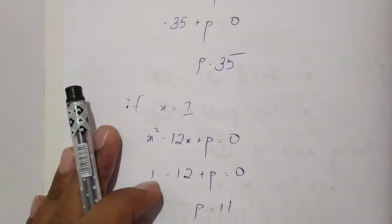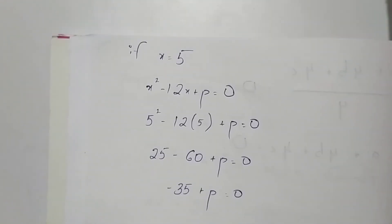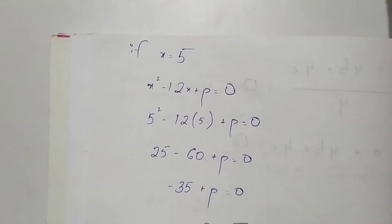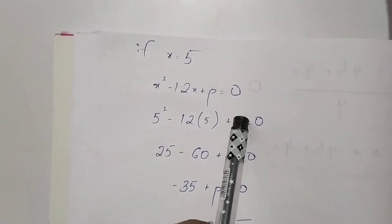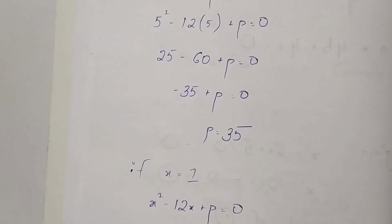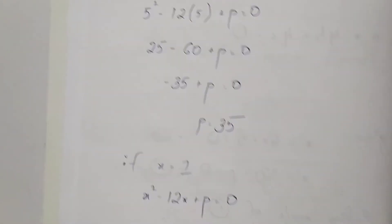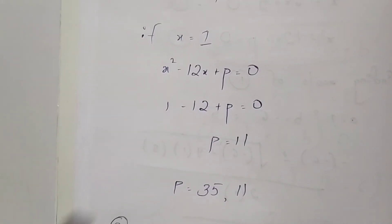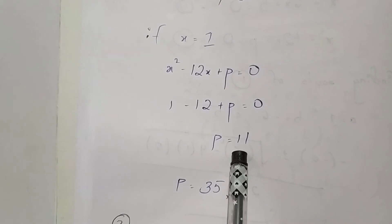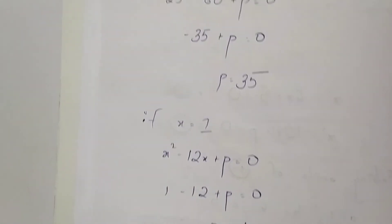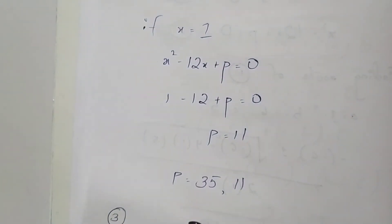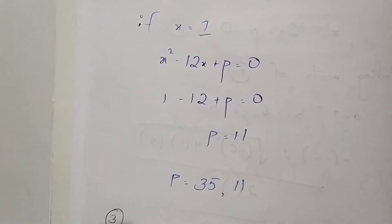So b will be 35. If x equals 5 is the common root of these equations, then the value of b is 35. If x equals 1 is the common root, then the value of b will be 11. So we got two values of b: the first one is 35 and the second one is 11. Thank you.